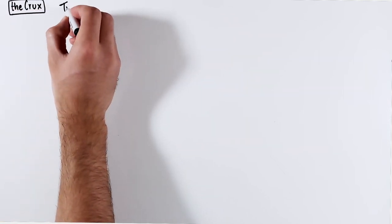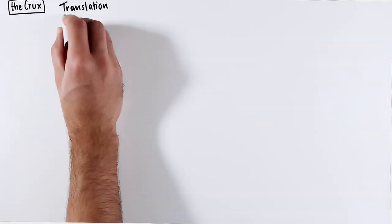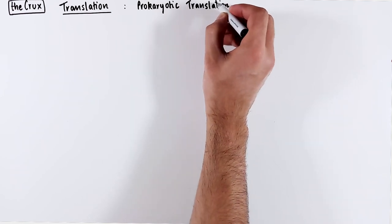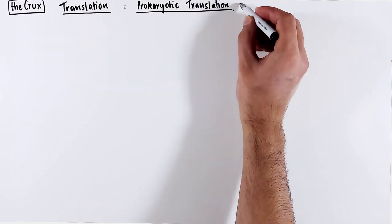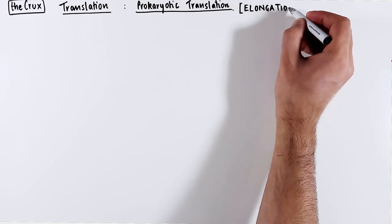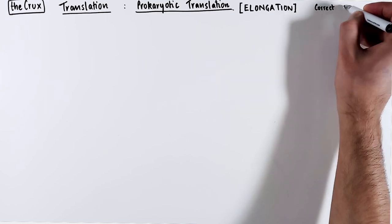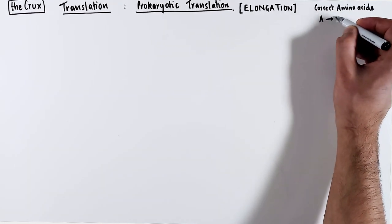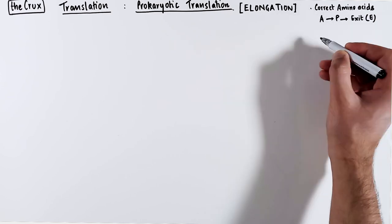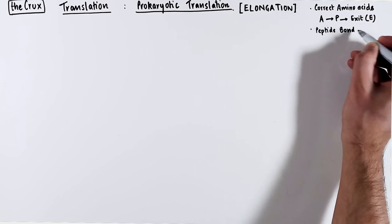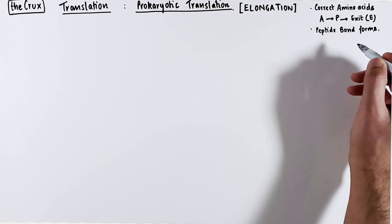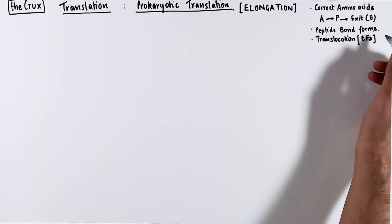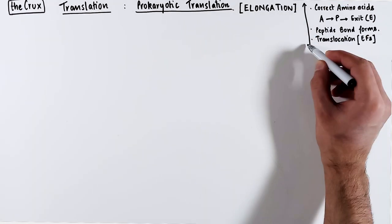We continue talking about prokaryotic translation and in this one we will take a deep dive into the elongation stage. We will discuss how correct tRNAs are paired at the A site and how they move to the P site and then to the E site. We'll also talk about peptide bond formation and how the overall translocation or movement of the ribosome depends on some key elongation factors.